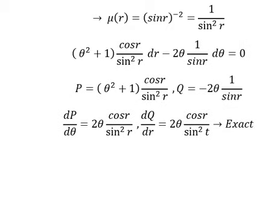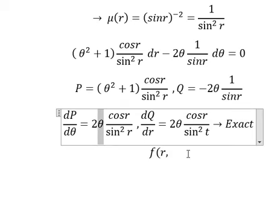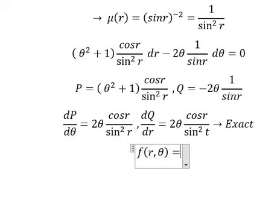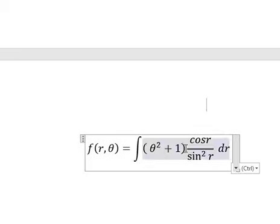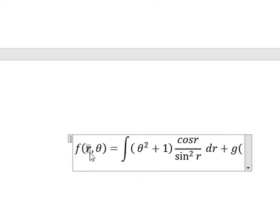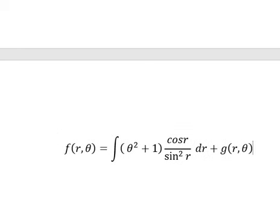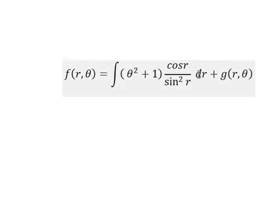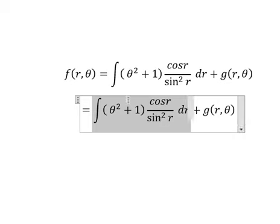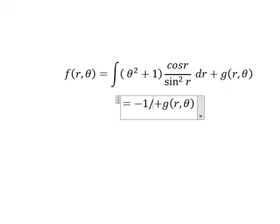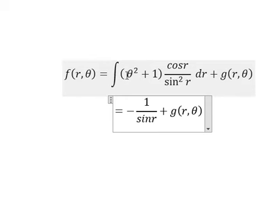Now we need to set up the function f of r and theta. We choose this term here — and we have 3r theta. The integration of this one gives negative 1 over sine r, and we multiply by this one.